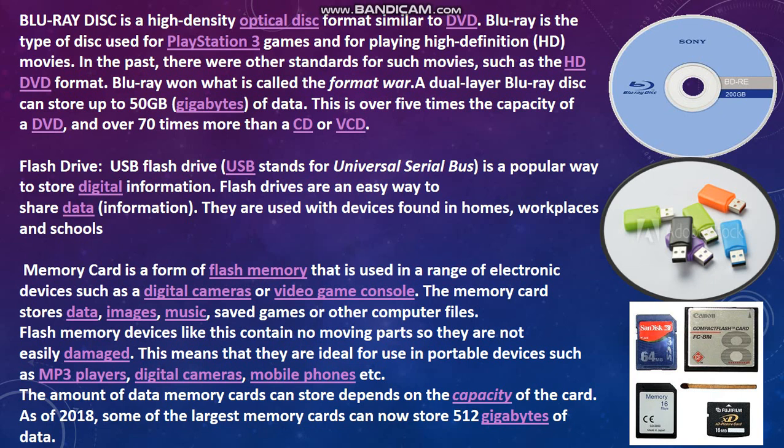Now we will discuss what is a Blu-ray disk. A Blu-ray disk is a high-density optical disk format similar to DVD. Blu-ray is a type of disk used for PlayStation 3 games and for playing high-definition HD movies. In the past there were other standards for such movies, such as the HD DVD format, but Blu-ray won what is called the format war. A dual-layer Blu-ray disk can store up to 50 GB of data, which is over 5 times the capacity of a DVD and over 17 times more than a CD or VCD.